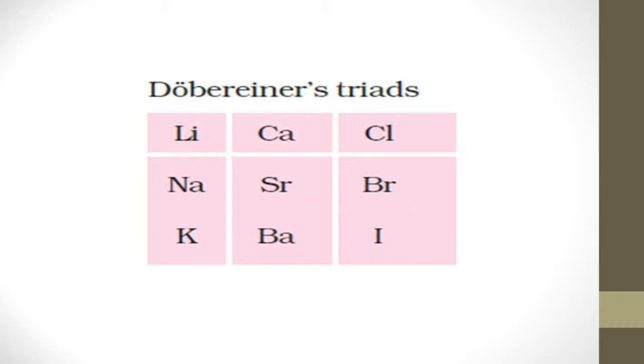So he called these groups triads because they each had three elements. Similarly, he identified other groups — one such group was chlorine, bromine, and iodine. With the help of this he was able to classify elements into groups having three members. However, the problem was that not all elements known at that time obeyed this law of triads — certain elements deviated and had different behaviour.